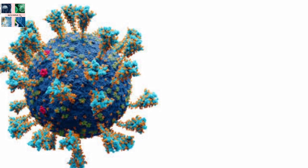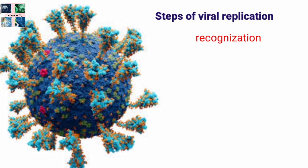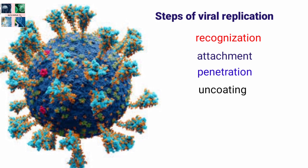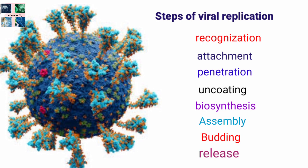The steps of viral replication are: (1) recognition of the target cell, (2) attachment of the virus particle to the cell surface, (3) penetration into the host cell, (4) uncoating of the outer layer and capsid, (5) biosynthesis — including transcription of mRNA from viral nucleic acid, translation of mRNA into early proteins, replication of viral nucleic acid, and synthesis of late proteins, (6) assembly of viruses in the nucleus or cytoplasm, (7) budding of enveloped viruses, and (8) release of viruses.